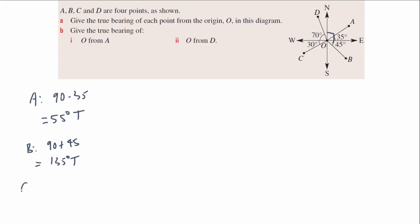Point C is towards the bottom left. I'm trying to find that angle there. Instead of adding everything, we'll do a shortcut — we know from north to west that's going to be 270. So I can do 270 minus 30 to get that bearing, because it's 30 degrees off being 270. So 270 minus 30 gives me a bearing of 240 degrees true.